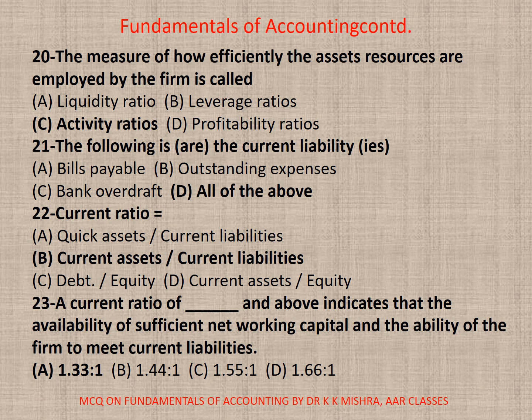Question 20: The measure of how efficiently the assets and resources are employed by the firm is called — A. Liquidity Ratio, B. Leverage Ratio, C. Activity, or D. Profitability. Correct option is C. Activity Ratio.